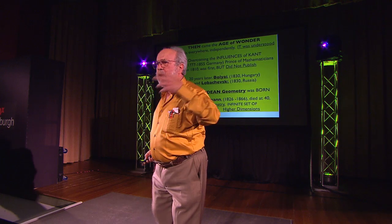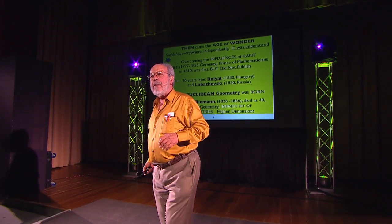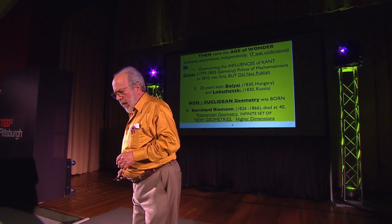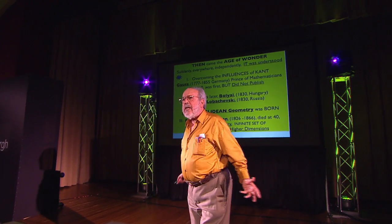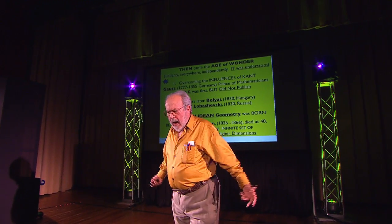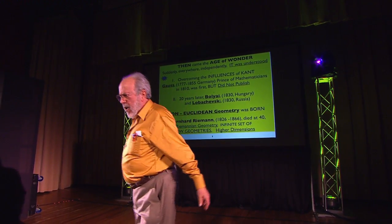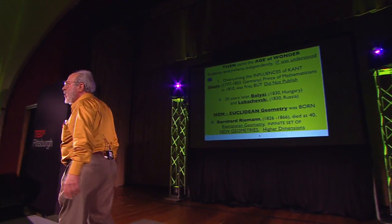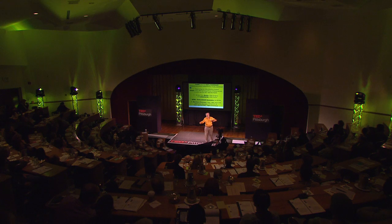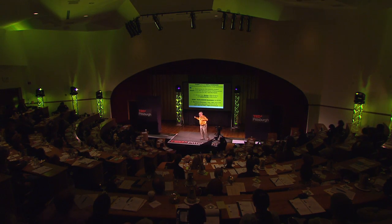And then there's Lobachevsky, a Russian made famous by Tom Lehrer and his famous songs from Harvard. Non-Euclidean geometry was then born. I have to mention Bernard Riemann, who was Gauss's great student — who would probably have been Gauss's equal as the greatest mathematician if he had not died young of tuberculosis. He invented a whole series of new geometries called Riemannian geometry, which included all the previously known geometries, and opened the realm of what is the real geometry of our physical universe.